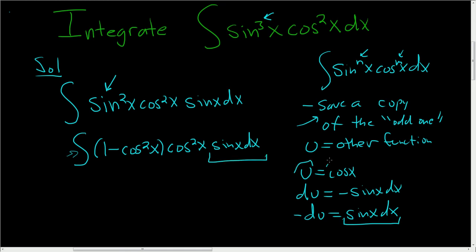And u is cos x, and we have cosines here. So let's do it. This is negative, pulling out the -1, times the integral of (1 - u²)u² du.